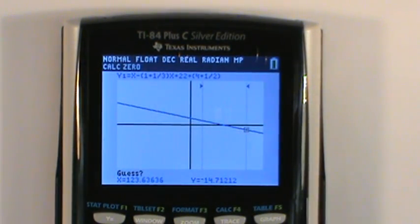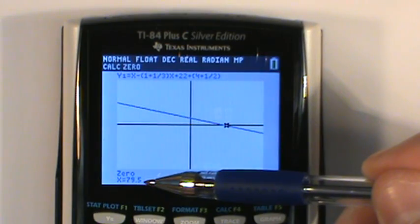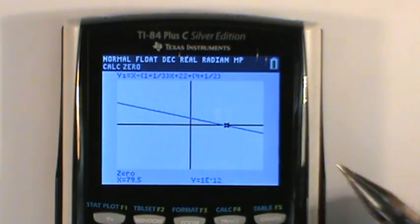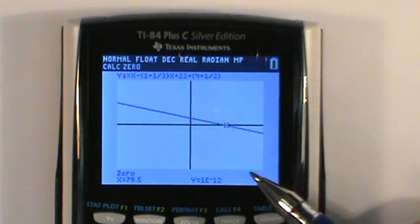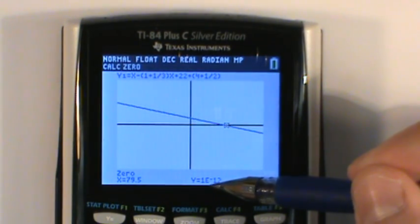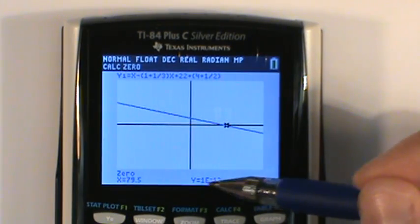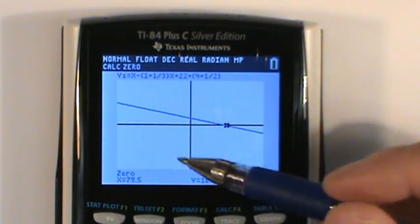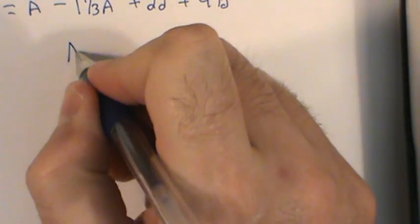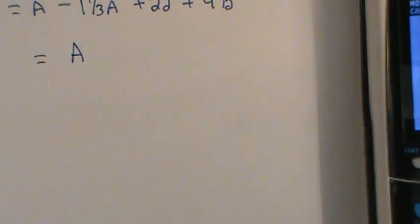And then you'll see down here, it actually reports a value. I know it's a little hard to see with the camera here, but that says 79.5. And then the y says 1 times 10 to the negative 12. That's really, really close to zero, so we assume that to be zero. And that means that we can actually go ahead and answer this by saying, A will equal 79.5.